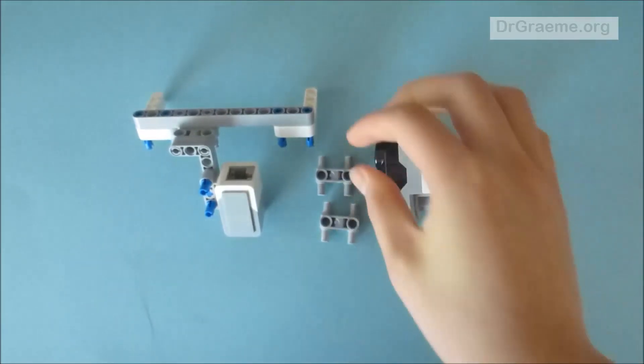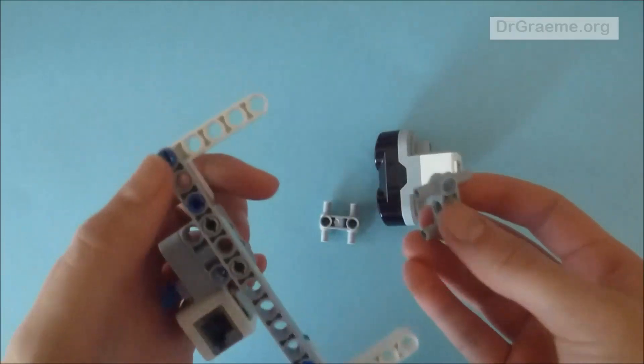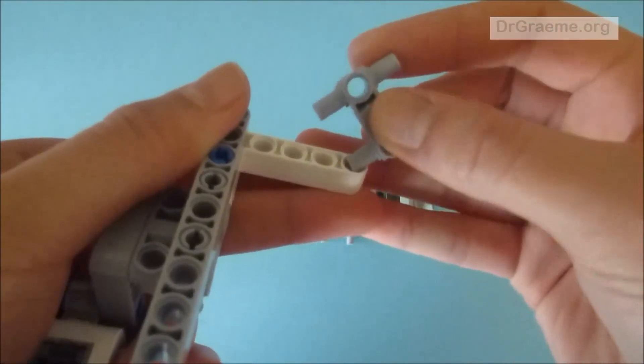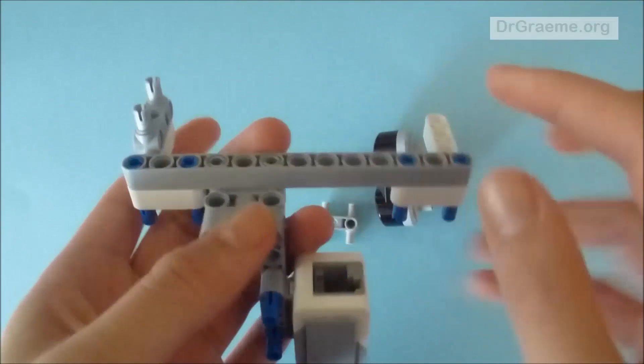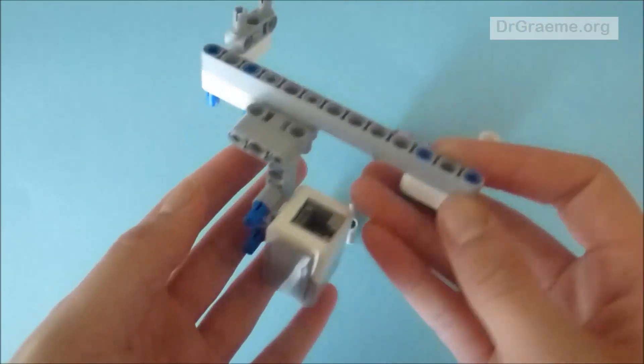Now we're going to take one of the H pieces and the thing we've already built, and we're going to place the H piece on the last three holes here. Notice that it's on this one and not that one, so this is what we have.